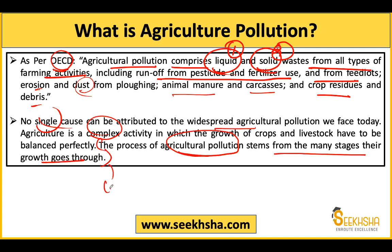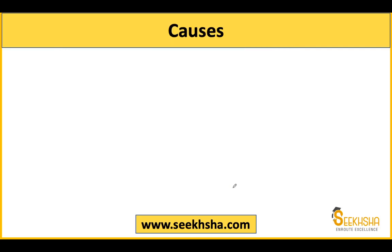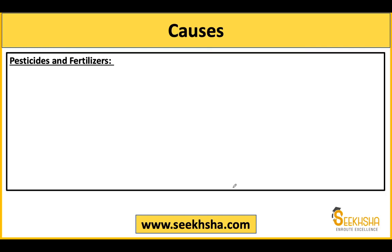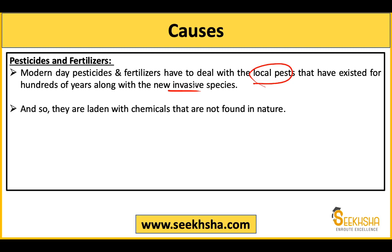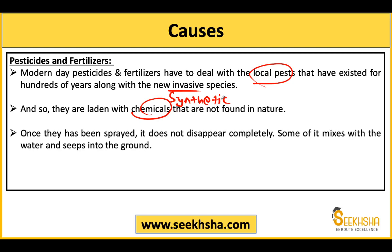The process of agriculture pollution stems from the many growth stages plants go through, creating pollution at every stage. Now moving to causes: pesticide and fertilizer use is one of the major reasons for agriculture pollution. Modern-day pesticides and fertilizers deal with pests and new invasive species from new crops. These synthetic chemicals don't completely disappear — some leach through water and enter water bodies.